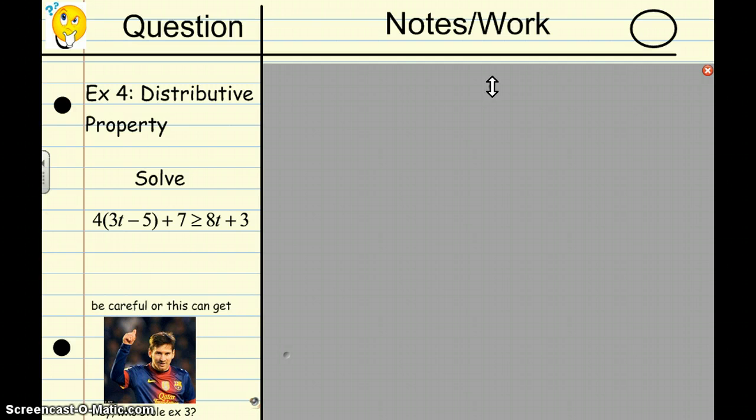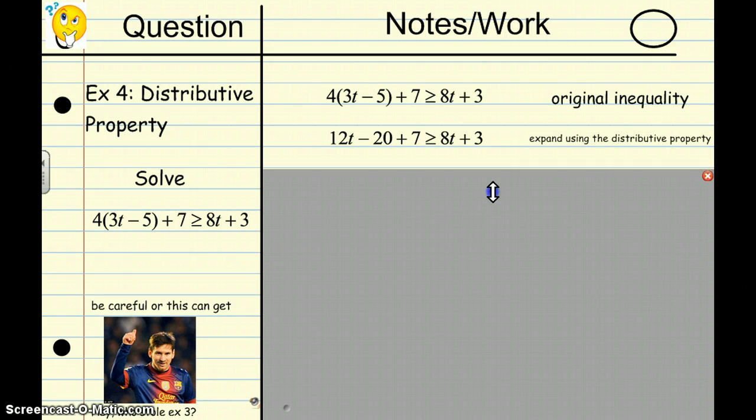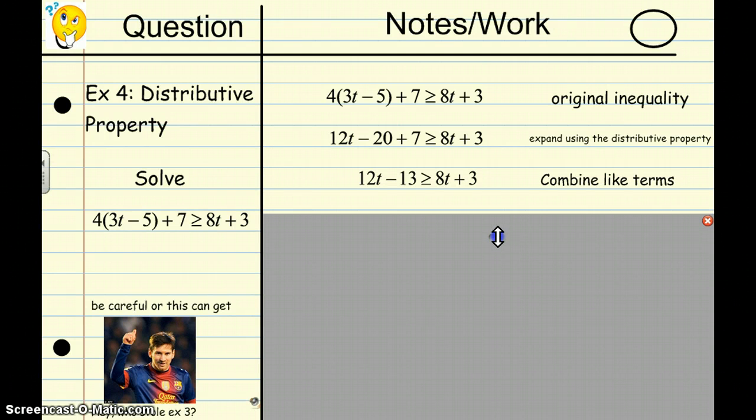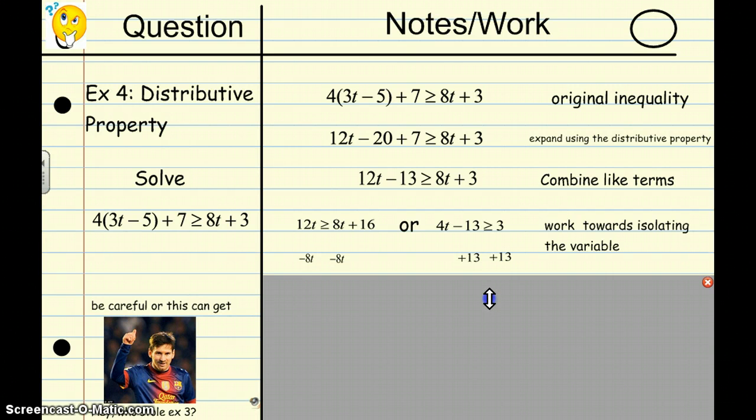I am going to reveal now the answer to this problem. Here is the original inequality. First step is to use the distributive property to expand to 12x minus 20 plus 7 greater than or equal to 8x plus 3. What do we do next? Well, you have some options. You need to combine the like terms. We see here we have a negative 20 and we add 7. That's negative 13. What shall we do? Pause if you like. Moving forward, we have to get that T alone. We have some choices. You could subtract 13 from, add 13 to both sides and get this. Or, you could subtract 8T from both sides and get this. Okay, you see those two options. Both work.